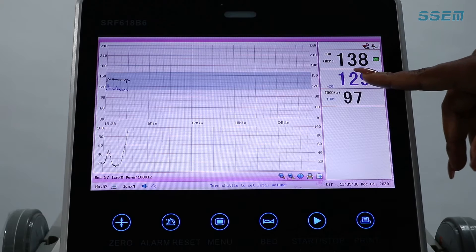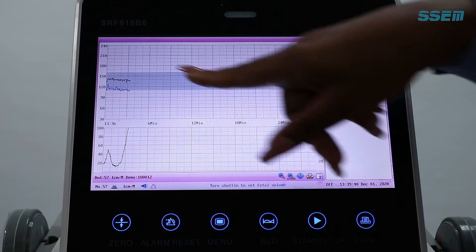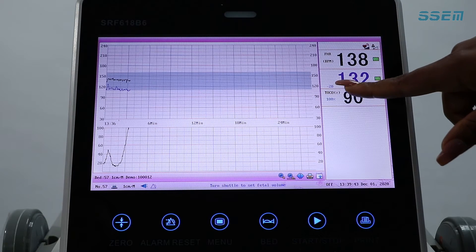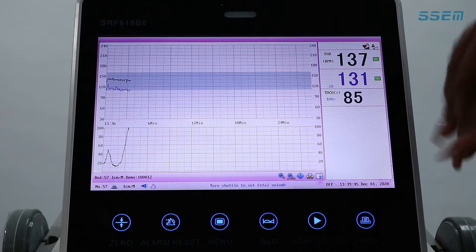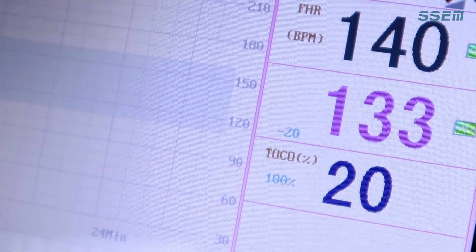FHR 2 has a negative 20. This ensures tracing separation. This is to ensure that there is no overlapping of the tracings. Remember when reading your tracing to add 20 BPM.